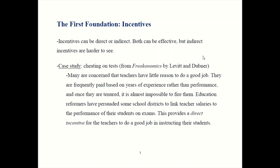To try to strengthen incentives, some reformers proposed linking teachers' pay to their students' exam scores. Teachers who make their students learn a lot would be paid more, motivating them to work harder. Teachers whose students fail the exams would get paid less or even get fired. So the direct incentive is telling teachers: if you get your class to do really well, we'll pay you more money.